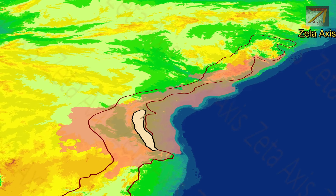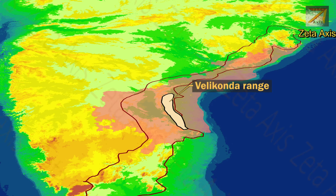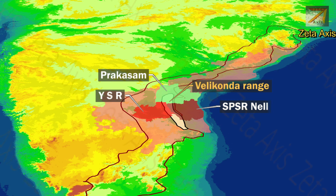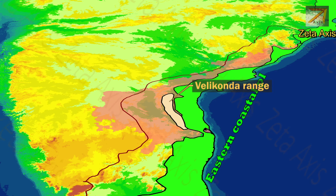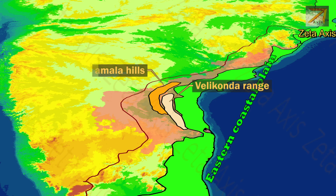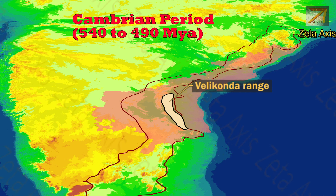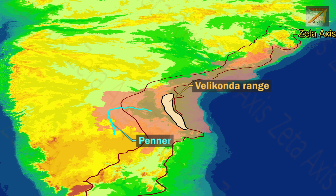The next important range is the Velikonda range, which has a north-to-south orientation and runs parallel to the eastern coast of India, forming the eastern flank of the Eastern Ghats. The Velikonda range is spread across Vaisar, Prakasam, and Nellore districts of Andhra Pradesh. To the east lies the eastern coastal plains and to the west rise the Nallamala hills. The Velikonda mountains are relics of ancient mountains formed during the Cambrian period, about 540 to 490 million years ago, and have been heavily eroded since. The Peniru river flows through the Velikonda ranges, creating a gap within them.